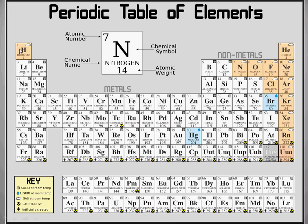Starting with periods: hydrogen and helium make up the first period, or first horizontal row, indicating that both contain only one energy shell. Elements in the second period — lithium, beryllium, boron, carbon, nitrogen, and others — all have two energy shells. Elements in the third period have three energy shells, the fourth period has four, and so on.